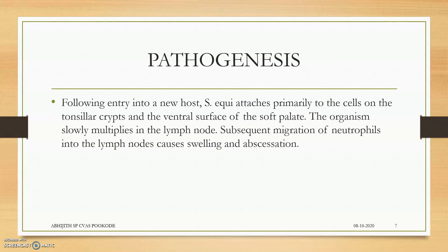Regarding pathogenesis: following entry into a new host, Streptococcus equi attaches primarily to the cells of the tonsillar crypts, the tonsillar lymph nodes, and the ventral surface of the soft palate. They then reproduce in the lymph nodes at an alarming rate, producing many bacterial copies that enter the blood and systemic circulation, leading to systemic invasion. The organism multiplies in the lymph nodes, and subsequent migration of neutrophils into the lymph nodes causes swelling and abscesses.